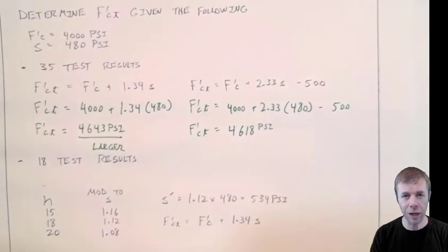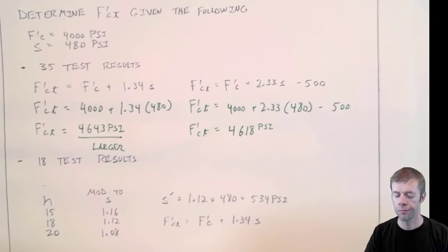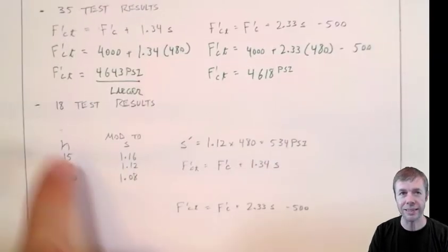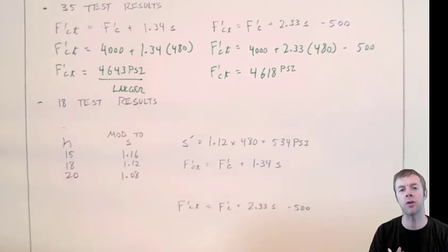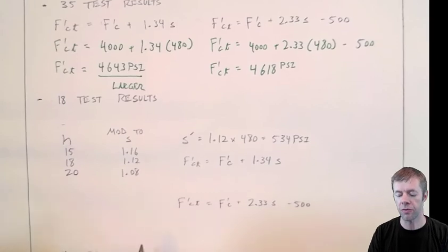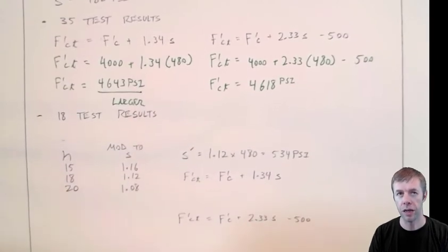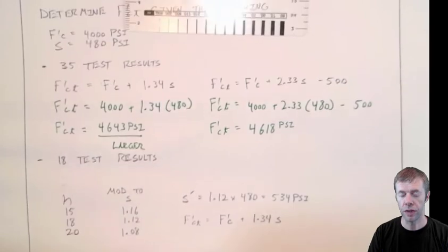Let's say I had the same situation, but I didn't have as many tests. Let's say I only had 18 tests. 18 times that I'd made the concrete mixture, I tested the concrete mixture. And this is my standard deviation. It was the same information before. 4,000 psi. Standard deviation, 480 psi.